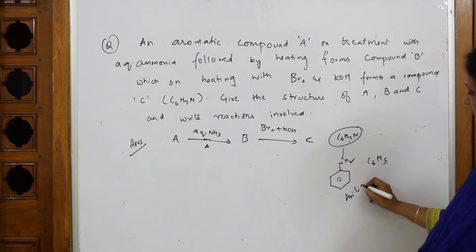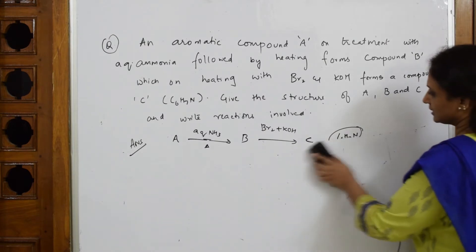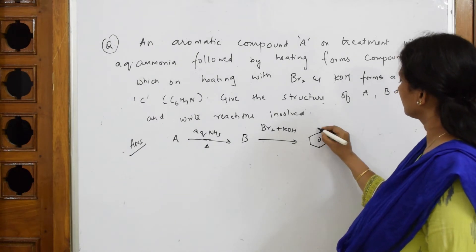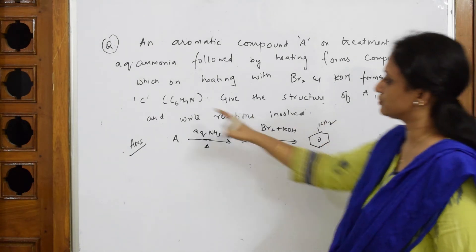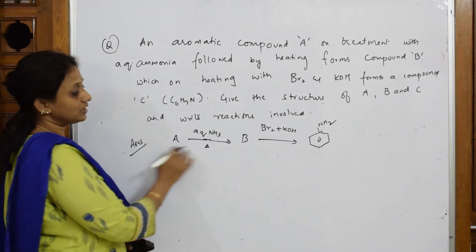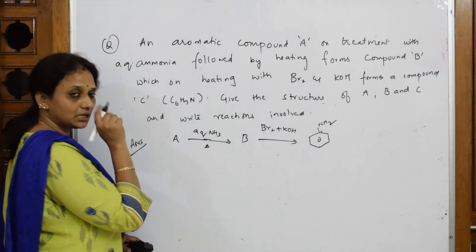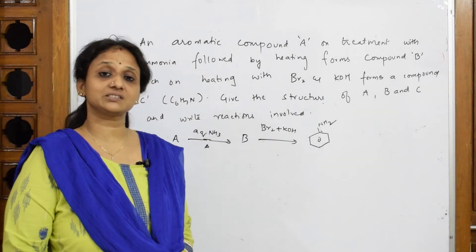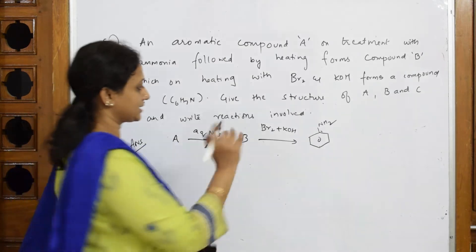So let us take that and write as compound C. This is aniline with the formula given to me. Let's start. They said compound A with aqueous ammonia will give me compound B. Now remember, this Br2 and KOH - where is this used? This is used in Hoffmann's bromamide reaction.